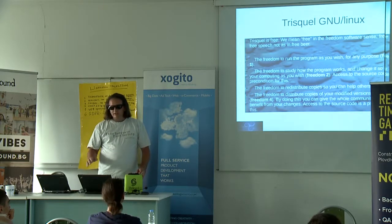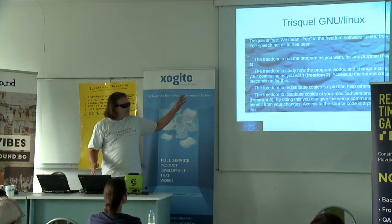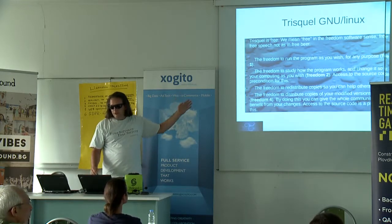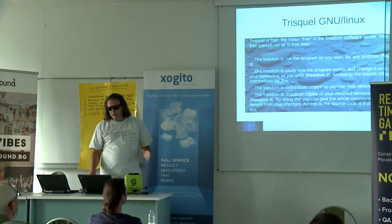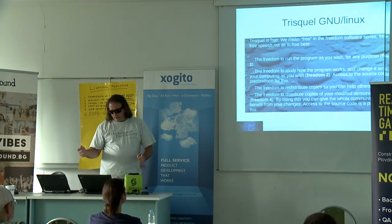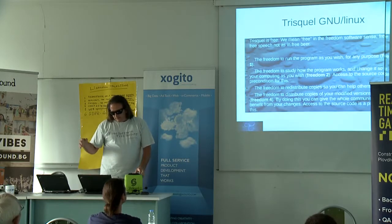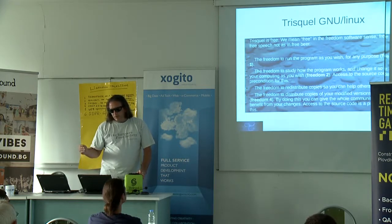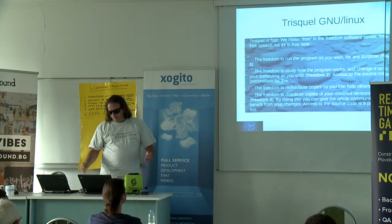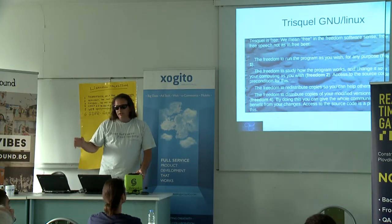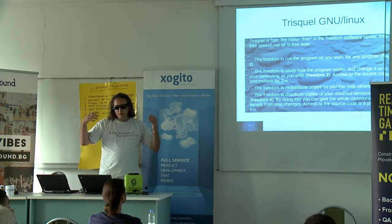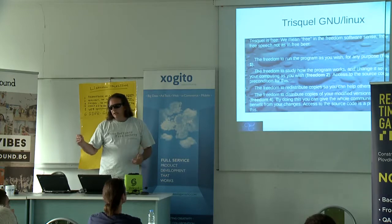These are the four essential freedoms you need to have to consider an operating system free. Freedom number one is to run the program as you wish. Freedom number two is to study the product — so you actually need the source code for this. Freedom number three is the possibility to redistribute your work, your program, even for commercial use.